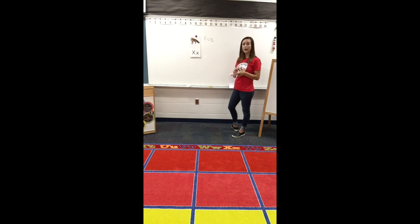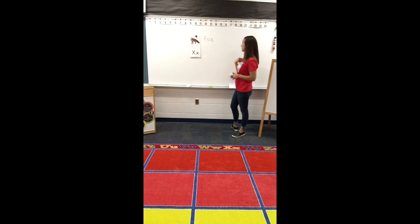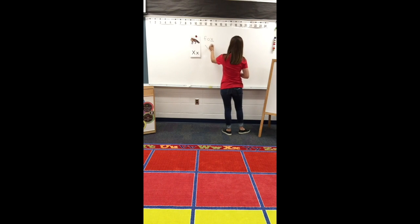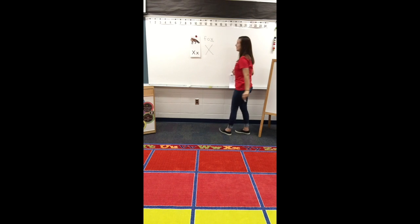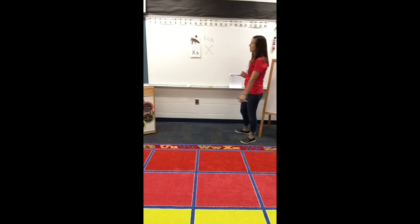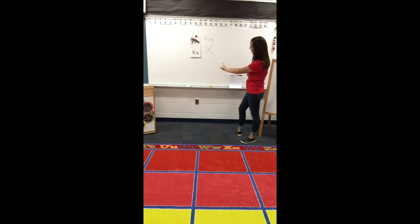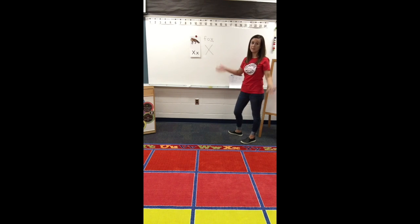Now let's learn how to write the letter X. Watch me the first time. Start at the top, slant right. Lift to the top, slant left. Easy peasy. Now get your finger out. Start at the top, slant right. Start at the top, slant left. Easy peasy.